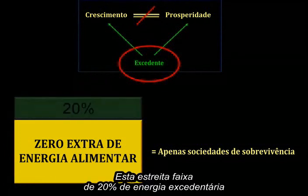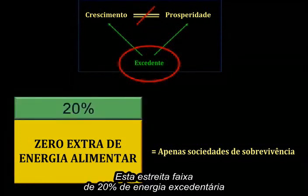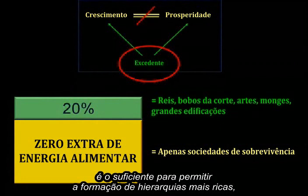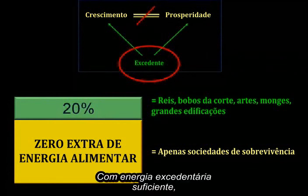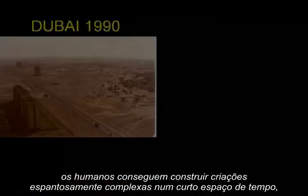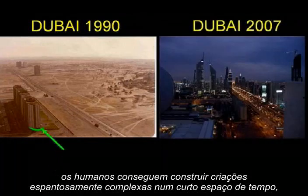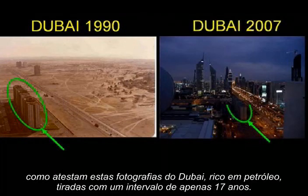This skinny 20% surplus allotment of energy is sufficient to allow rich hierarchies to form, job specializations to develop, and large works of architecture to be built. With sufficient surplus energy, humans can construct remarkably complex creations in short order, as these pictures of oil-rich Dubai taken only 17 years apart attest.